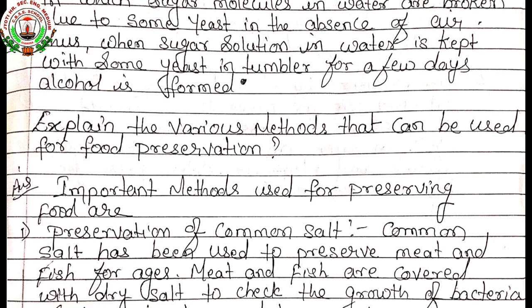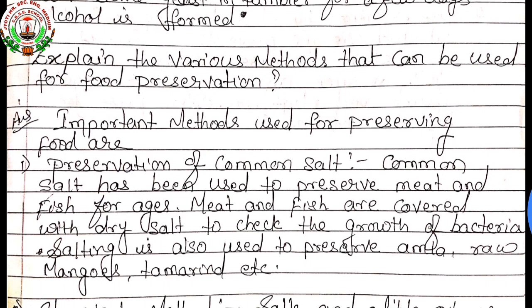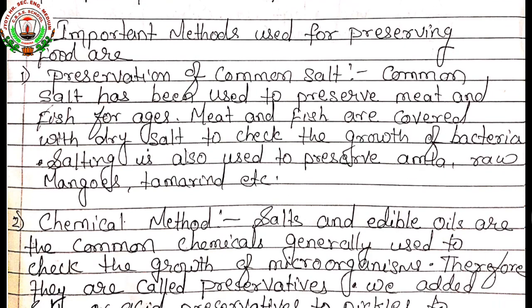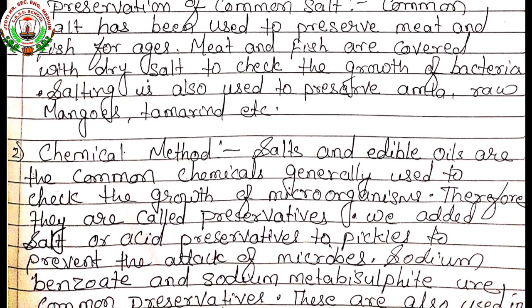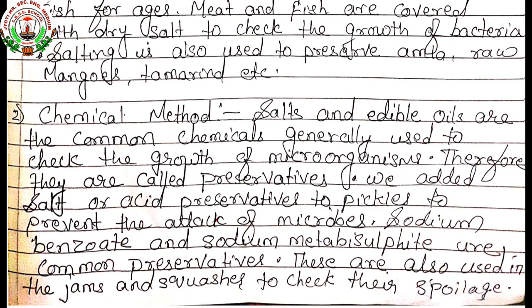Next question: Explain the various methods used for food preservation. Important methods are: First, preservation using common salt — common salt has been used to preserve meat and fish for ages. Meat and fish are covered with dry salt to check the growth of bacteria. Salting is also used to preserve amla, raw mangoes, tamarind, etc. Second, the chemical method — salts and edible oils are common chemicals used to check the growth of microorganisms, and are therefore called preservatives. We add salt or acid preservatives to pickles to prevent the attack of microbes. Sodium benzoate and sodium metabisulfite are common preservatives.